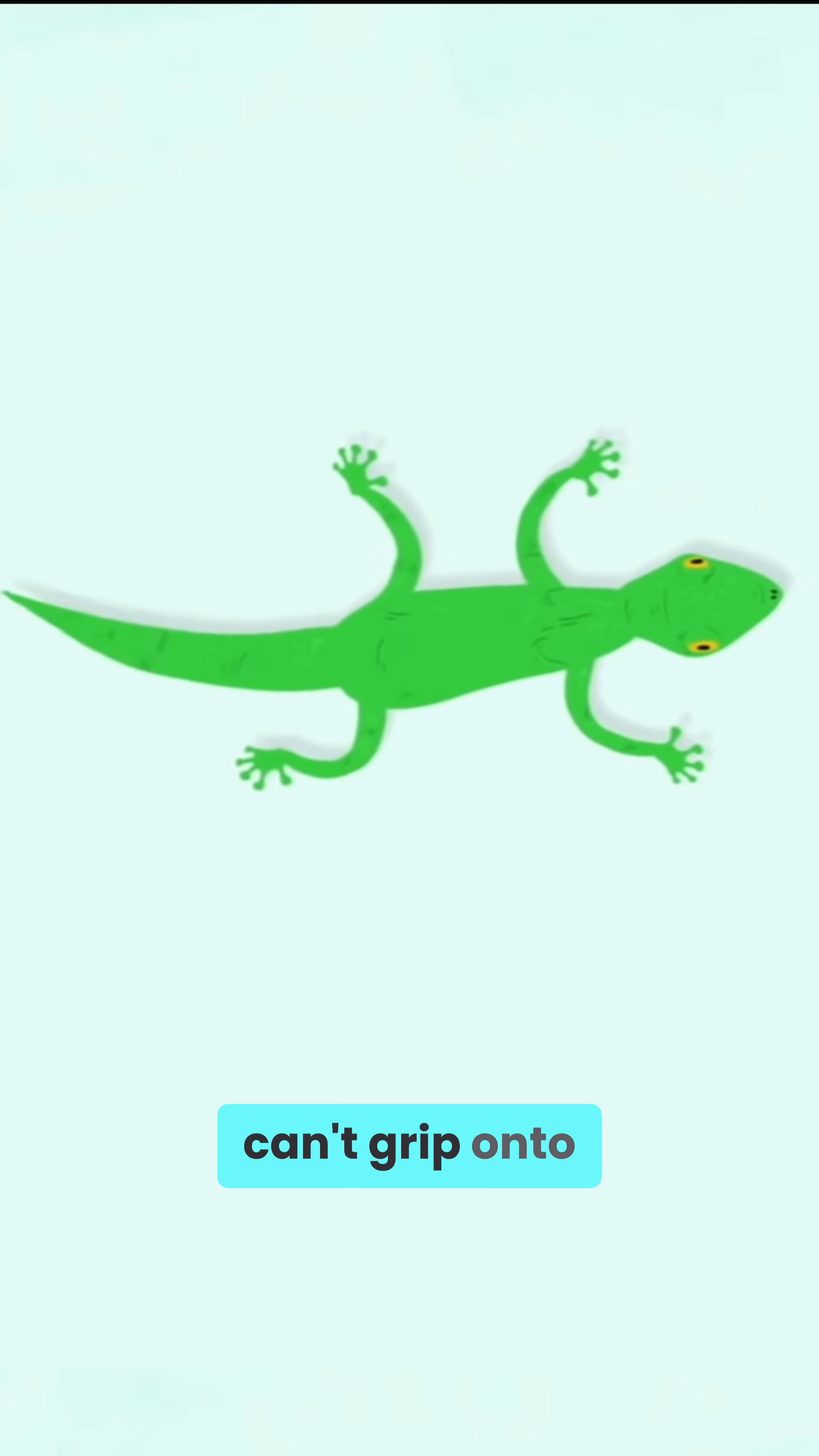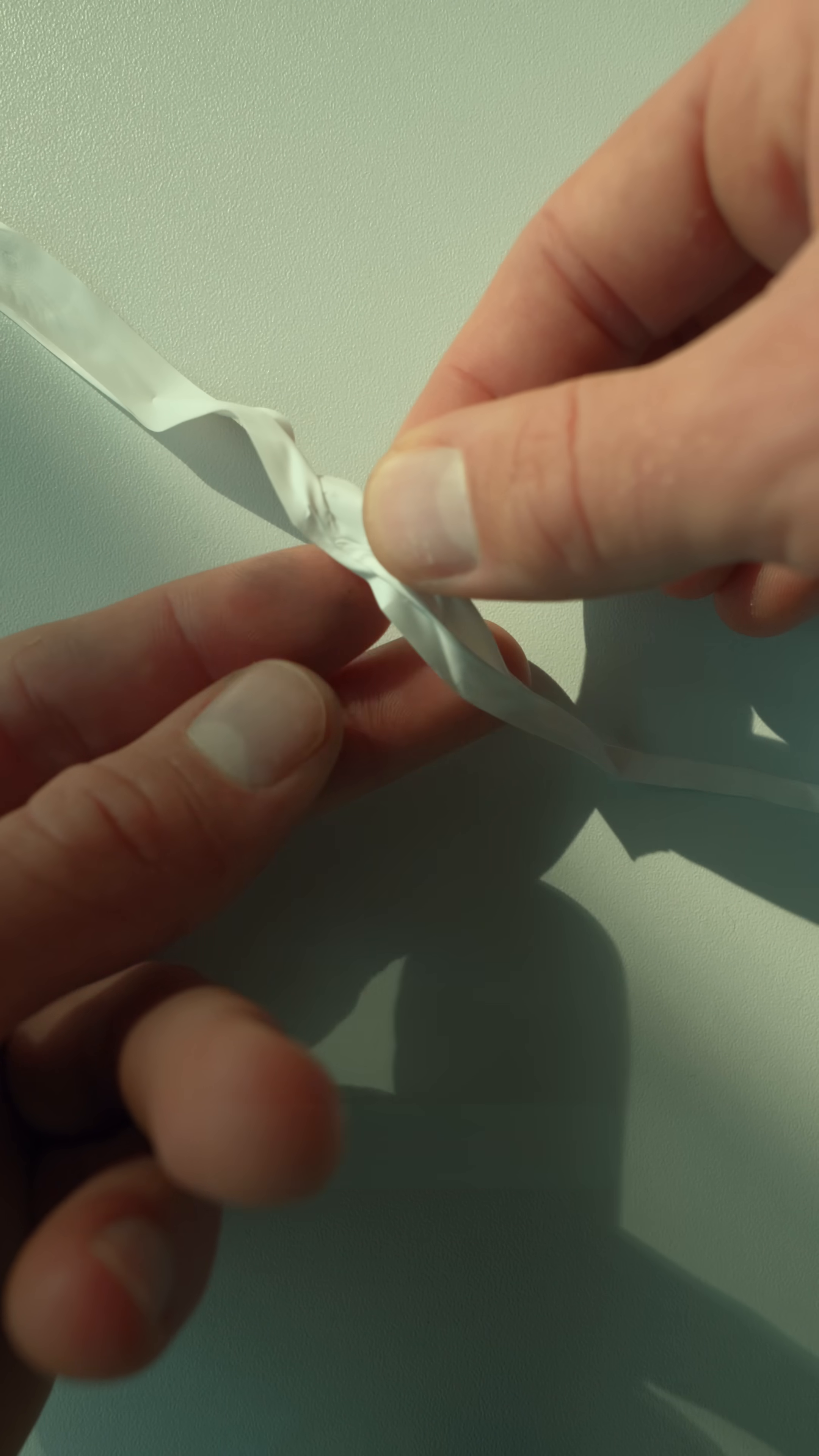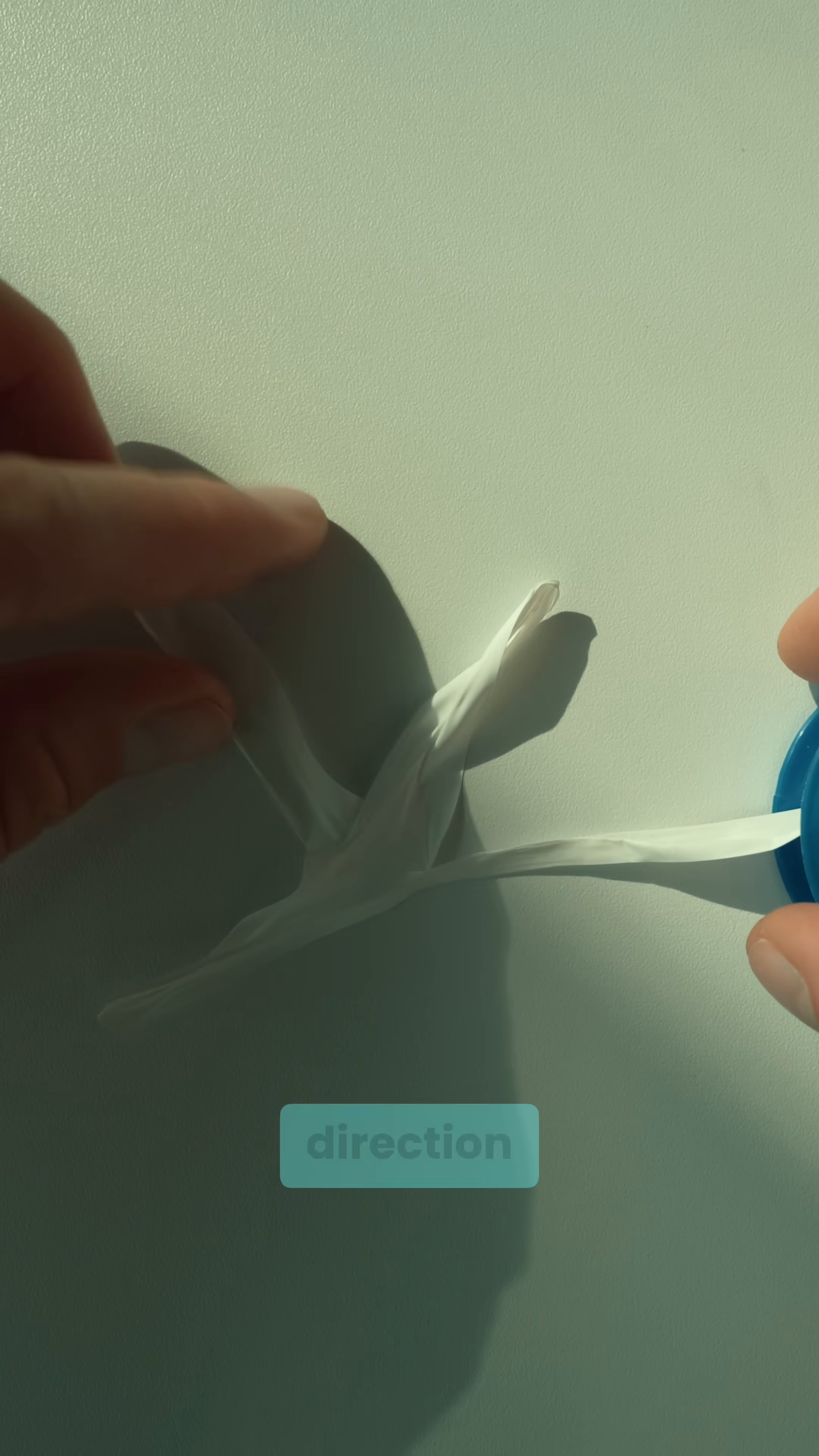Even a gecko, the ultimate climbing specialist, can't grip onto Teflon. Teflon's phobia is so strong that the chains don't even interact with each other. That's why Teflon tape stretches easily in one direction, but stays tough and unyielding in the other.